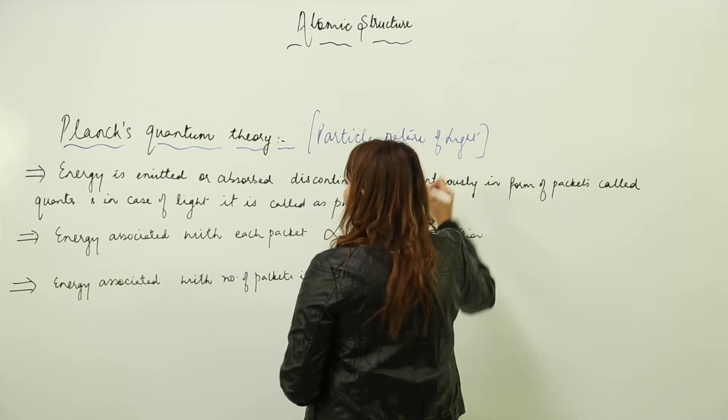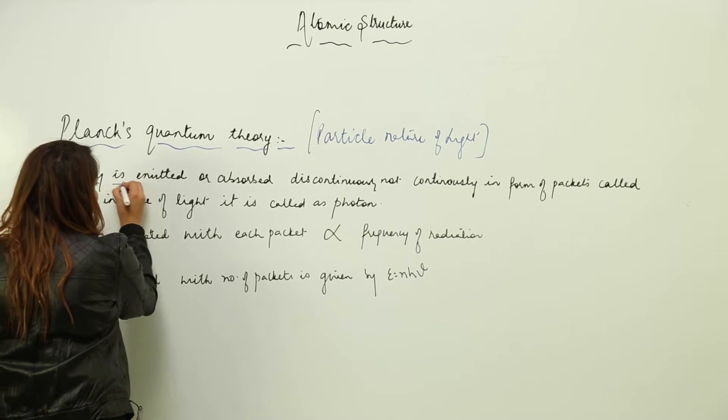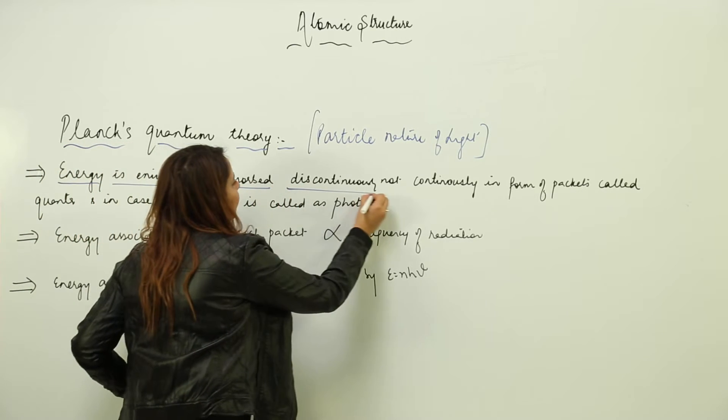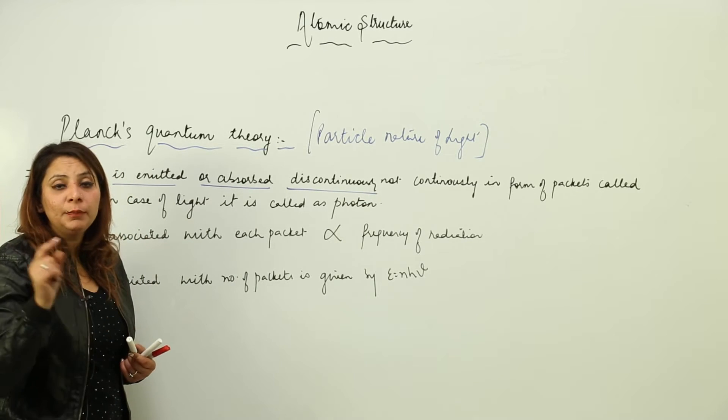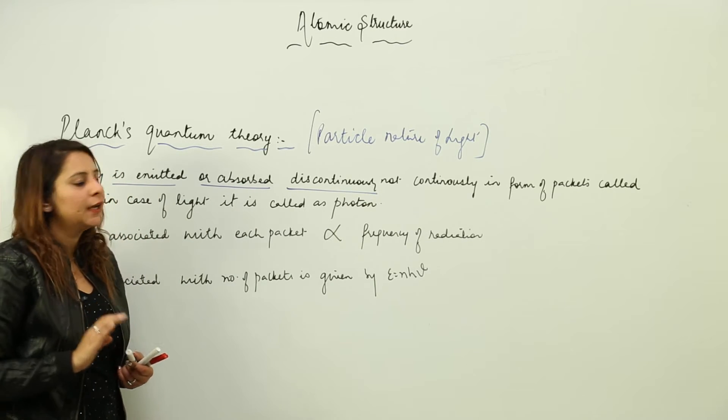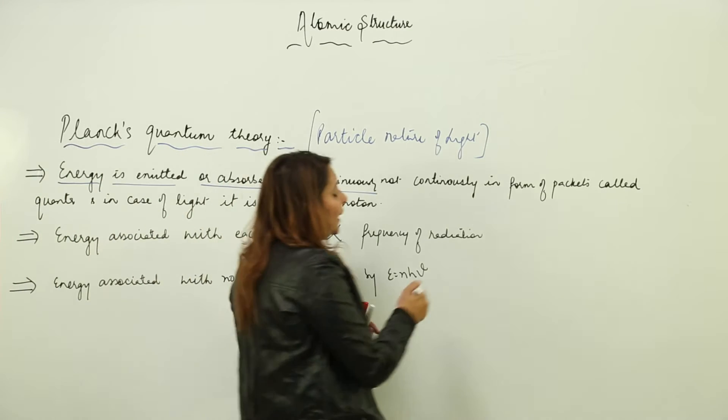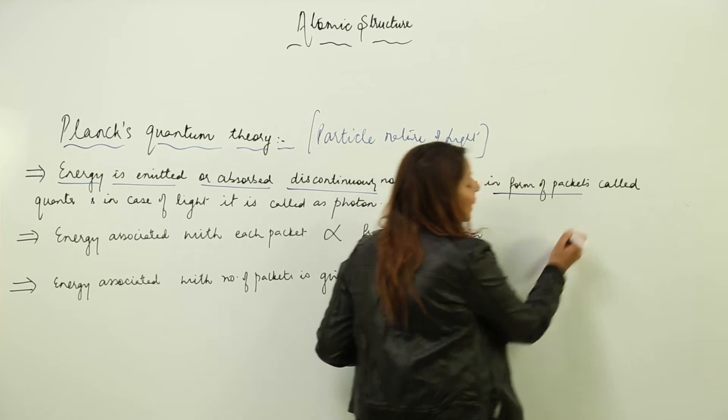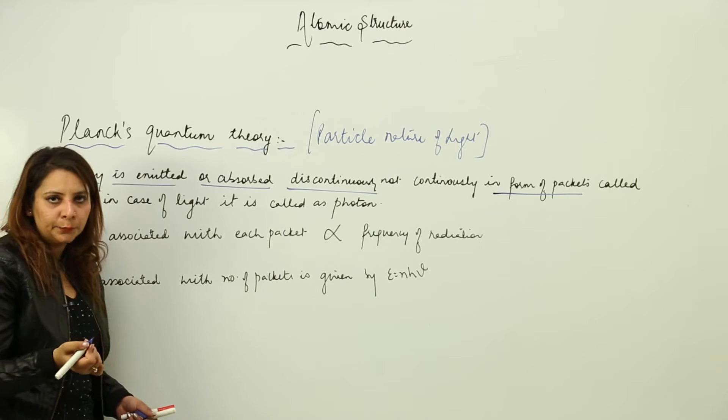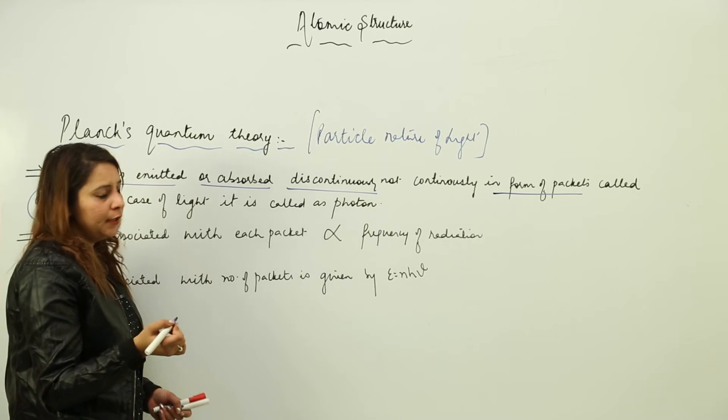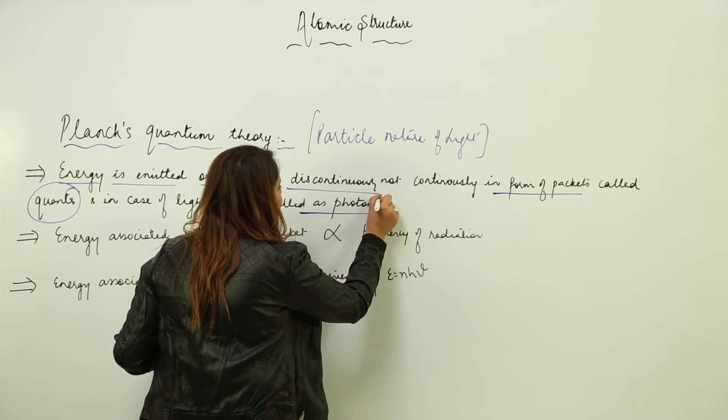According to this theory, energy is emitted or absorbed discontinuously. Earlier in electromagnetic wave theory, it believed in continuous generation of energy, but here energy is emitted or absorbed discontinuously in the form of packets. Each packet is called quanta or quantum, and in case of light, the packet is called a photon.